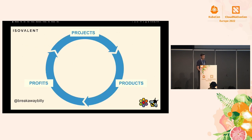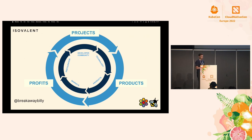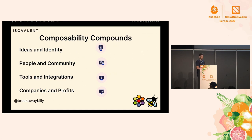But this is on the technical, code side. What about the businesses? Going back to the cycle again, we have projects leading to products, products leading to profits, and these profits are fed back into creating new projects. On the project side, the developer community and the technology are transformed into products — whether that's an enterprise distribution or a combination of multiple products — into something that companies can sell to specific vertical markets or as a platform. These profits allow companies to participate back in the ecosystem, sustaining existing projects and creating new ones to meet their customer needs. So composability compounds ideas and identity, people and community, tools and integration, and companies and profits.